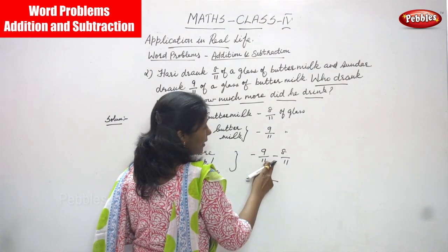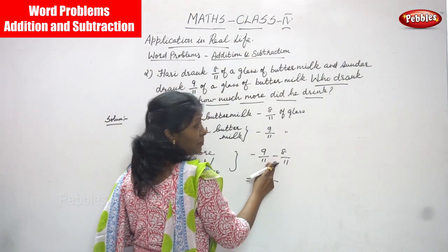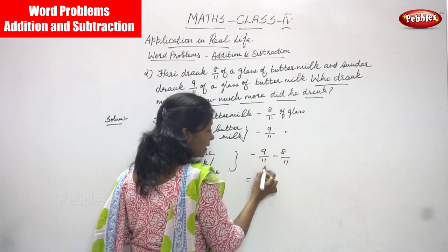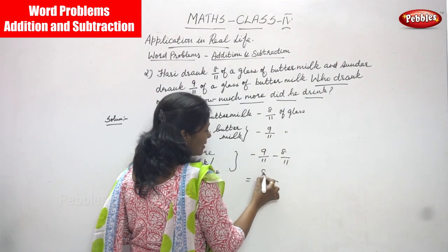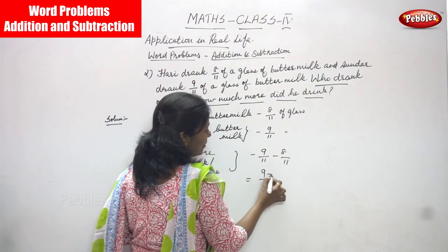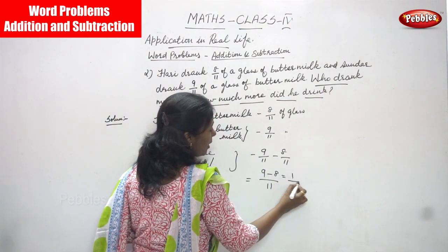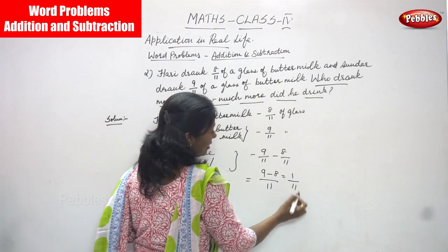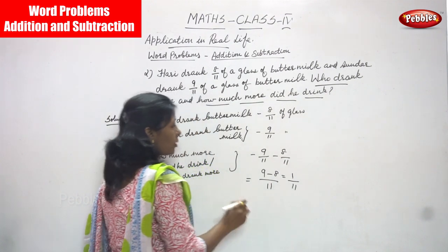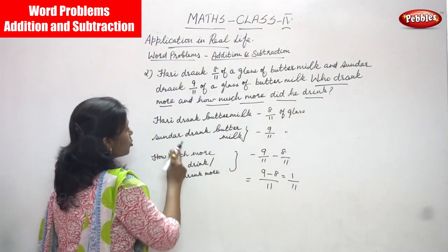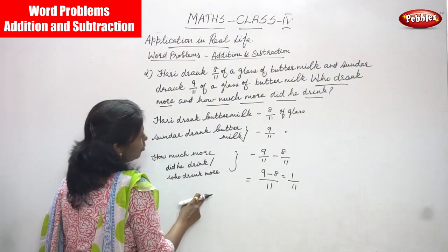Since the denominators are the same, you write it one time. Look at the sign — it is minus. So you write the numerators: nine minus eight, which gives you one by eleven.